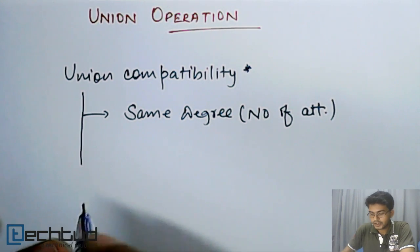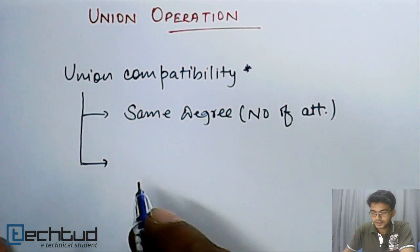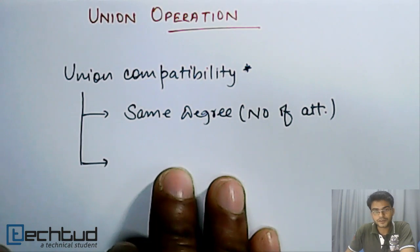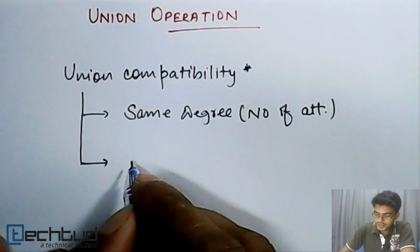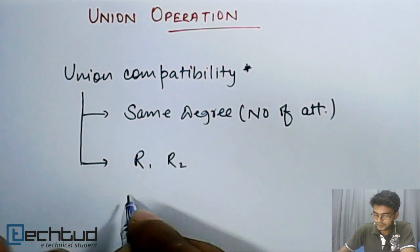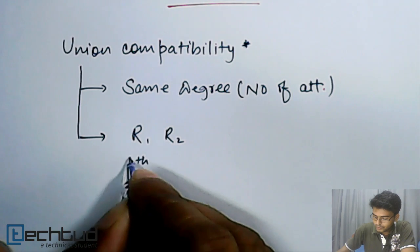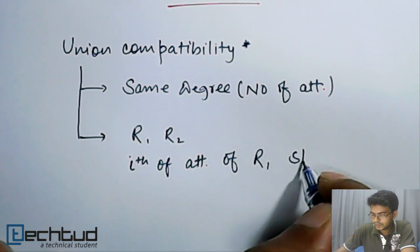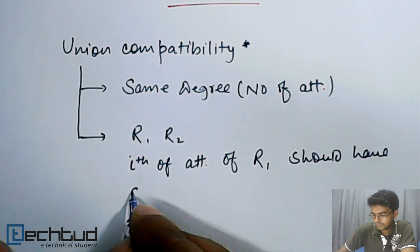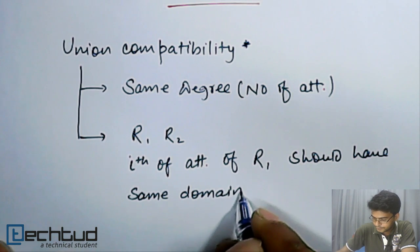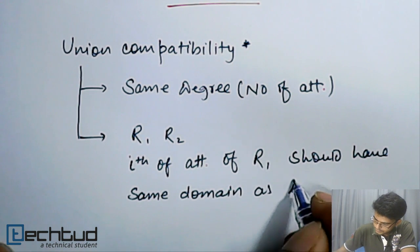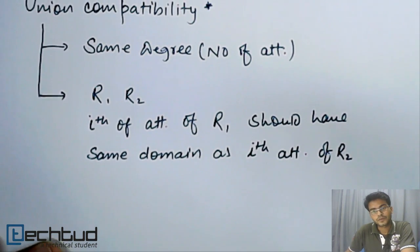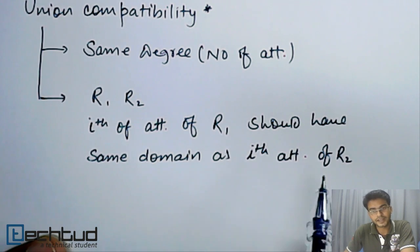Now the second criteria which union compatible relations have to satisfy is: if R1 and R2 are two relations which we are observing for union compatibility, then the ith attribute of R1 should have the same domain as the ith attribute of R2.